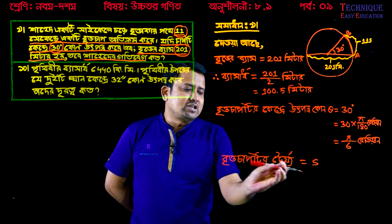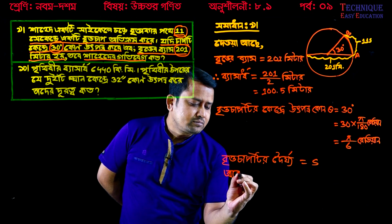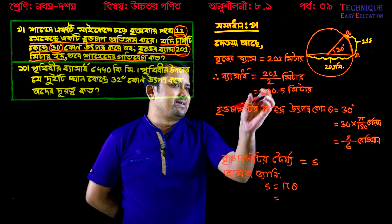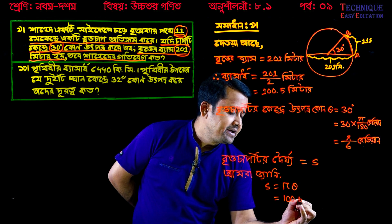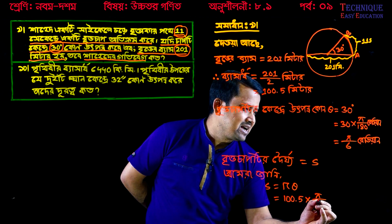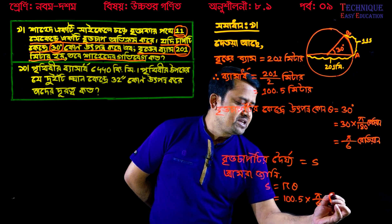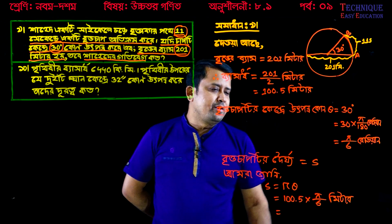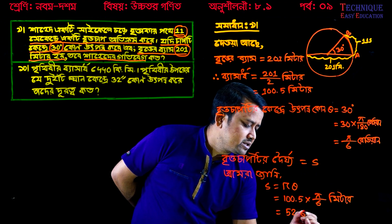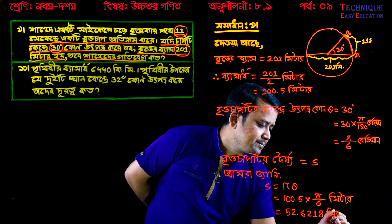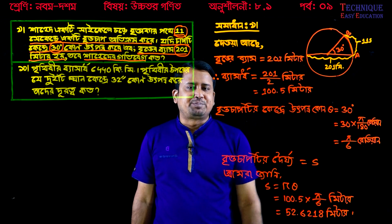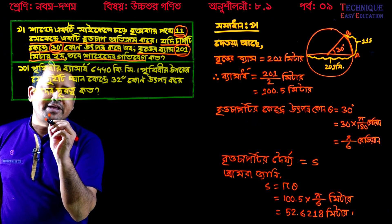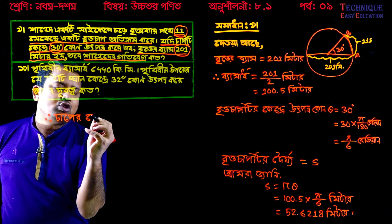You can see this whole thing. You know s is r theta. R theta is 100.5, theta is 5 to 6. Look, this is a meter. This is pi. Pi is 3.1416. Look, this is 6218. This is a meter. Look, this is SPSC. This is SPSC.